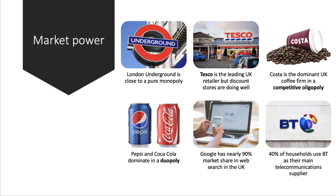The extent of market power depends on the degree to which the market is concentrated. Markets such as the London Underground are close to a pure monopoly, although it depends on how we define the mode of transport. Tesco remains the leading UK grocery retailer, although Aldi and Lidl are making gains, and Asda and Sainsbury's had their proposed merger blocked by the Competition and Markets Authority. Costa Coffee is the dominant coffee firm, essentially a competitive oligopoly, and was recently bought by Coca-Cola.